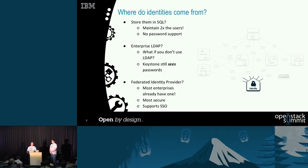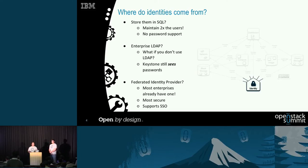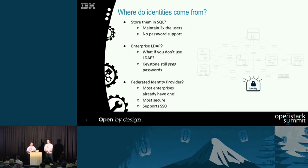Identities are what are authenticated by Keystone in OpenStack. Where can these identities come from? The operator can store the identities inside Keystone, inside its own SQL backend, though it doesn't have very good password support. The next step is that identities can come from an enterprise LDAP, which is very common and gives you integration with the customer's existing identity store.